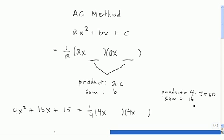So now our search is to find two numbers whose product is 60 and whose sum is 16. Those two numbers are 10 and 6.